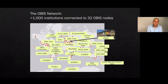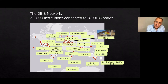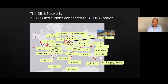The data network of OBIS consists of more than a thousand institutions that are providing data. They are providing data to the 32 OBIS nodes, and then the OBIS nodes provide the data to the international OBIS.